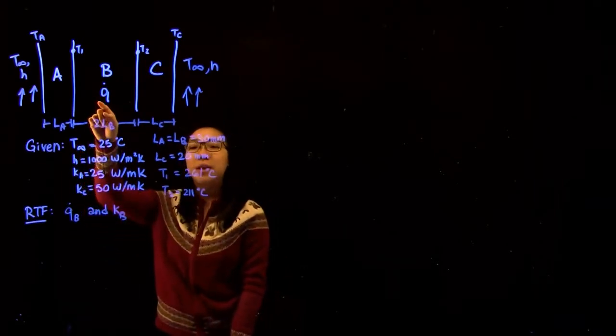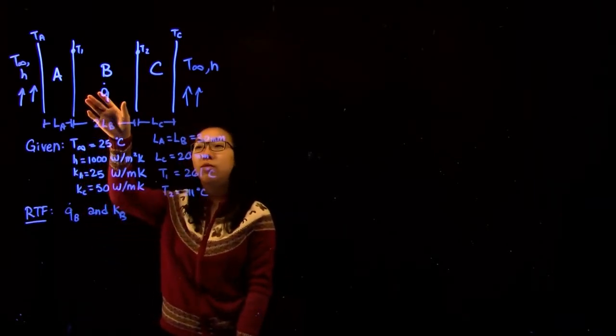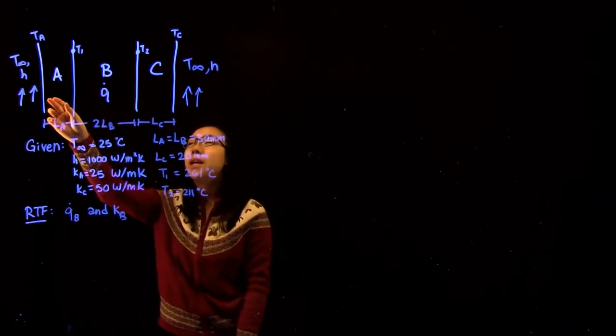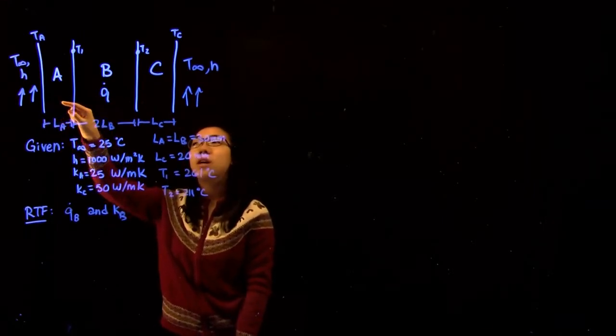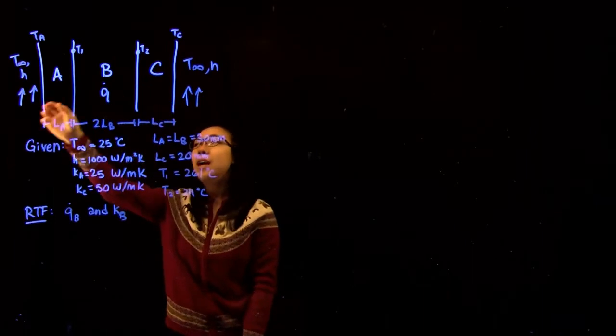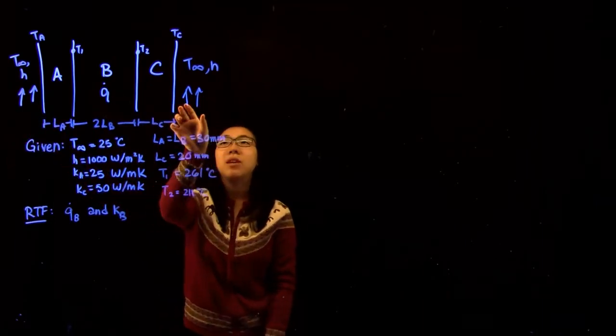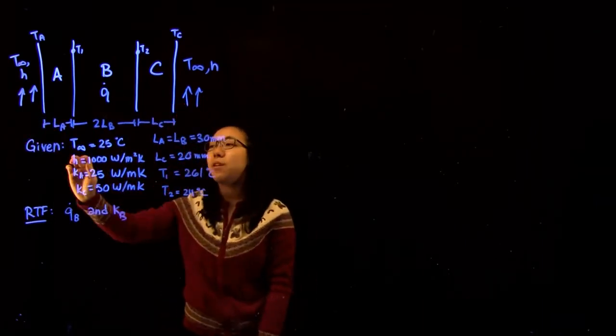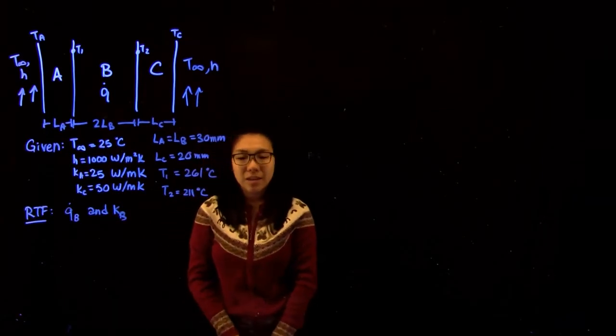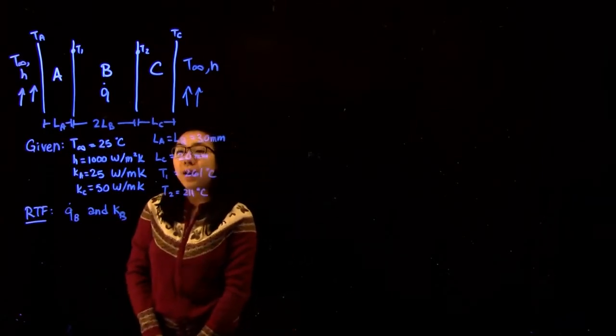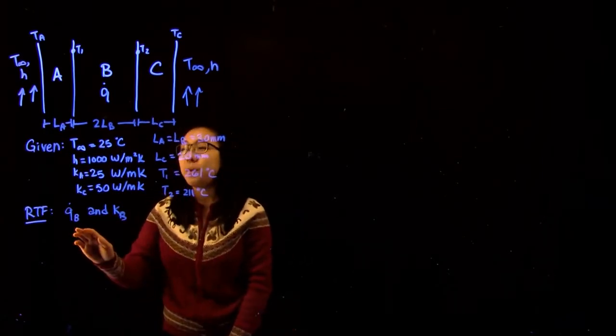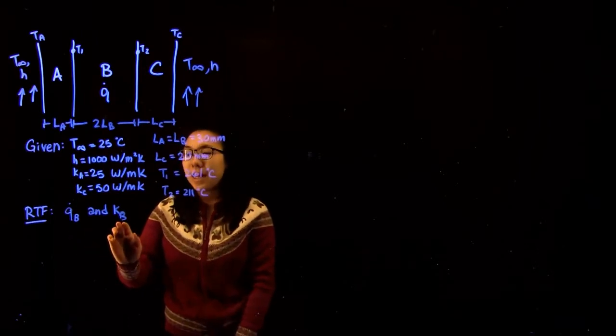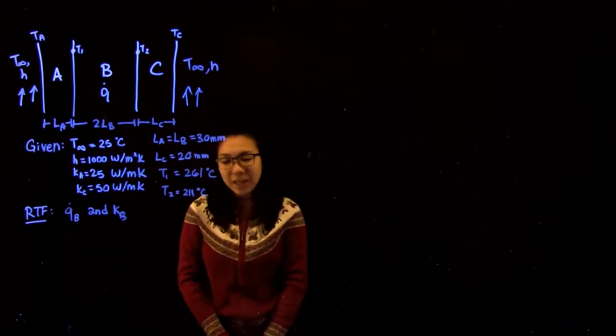We know that because we have heat being produced in the center region there is conduction happening in the direction to go into region A and region C and convection happening at these boundaries where you have a fluid given to be at 25 degrees Celsius. What we need to find is the rate of heat generation QB within volume B and the thermal conductivity of that section as well.